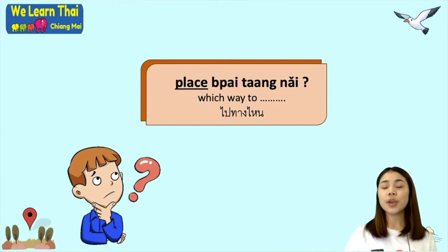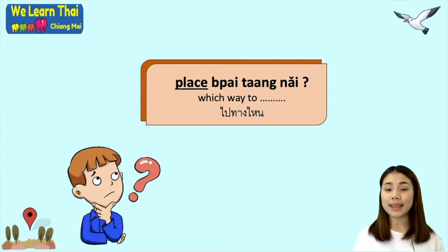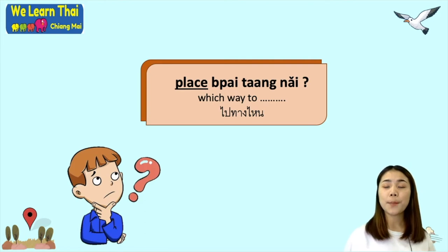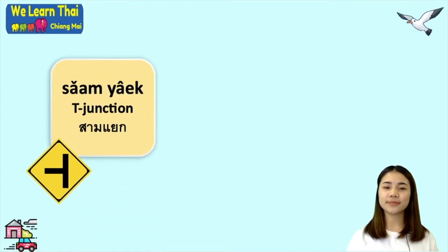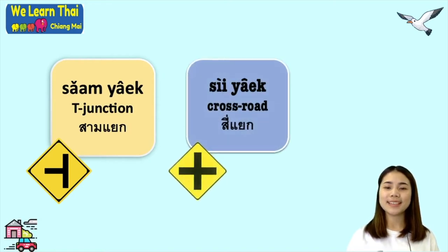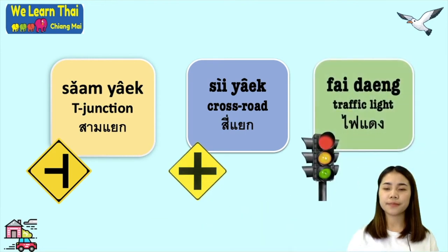When you want to ask which way to get to a place, you use the question word 'bai thang nai', which means 'which way to'. Related vocabulary: 'sam yag' means T-junction, 'si yag' means crossroad, and 'fai dang' means traffic light.